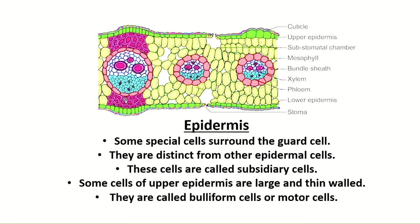Some special cells surround the guard cells; they are distinct from the regular epidermal cell structure and are defined as subsidiary cells. Some of the upper epidermal cells are larger and thin-walled, and those cells are called buliform cells or motor cells. In the picture you can find some large-sized cells compared to the other cells — these largest thin-walled cells are represented as buliform cells or motor cells.